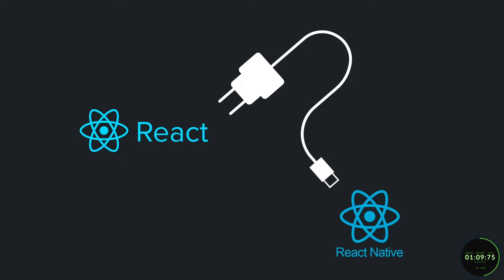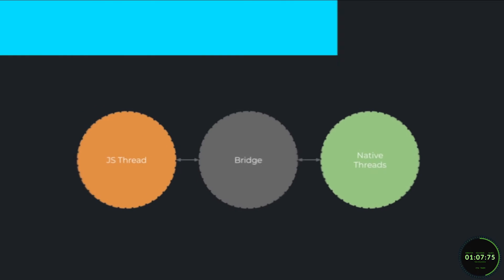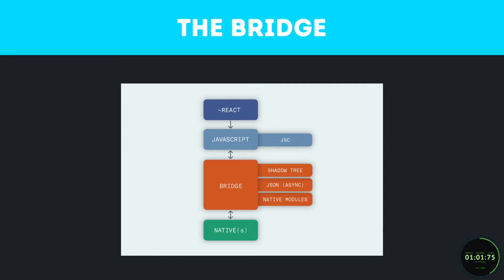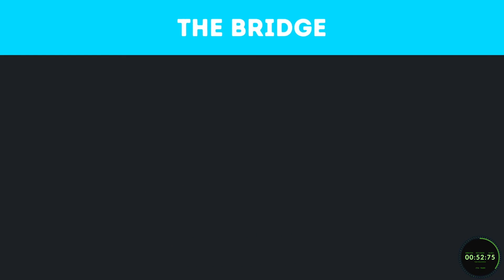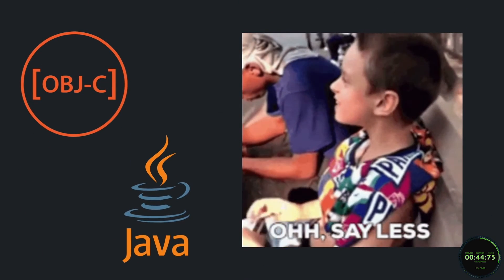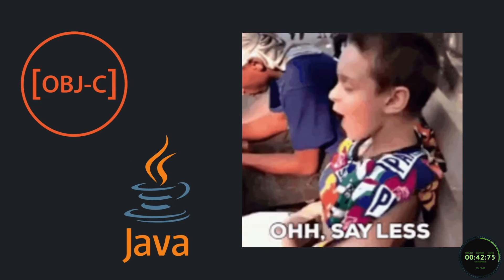One of React Native's most important pieces is its bridge. This gives the framework the ability to use the same code base throughout multiple platforms. At its bare bones, the bridge transforms JavaScript code into native components and vice versa. Unlike many other cross-platform mobile development frameworks, React Native renders native components by invoking platform-specific APIs. This means you can do it all with React Native and you don't have to spend time learning languages like Objective-C or Java just to create native-like applications.